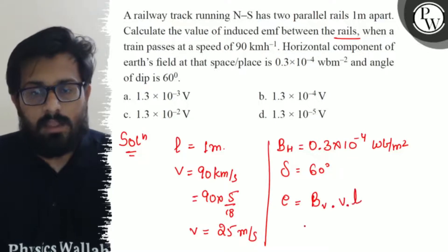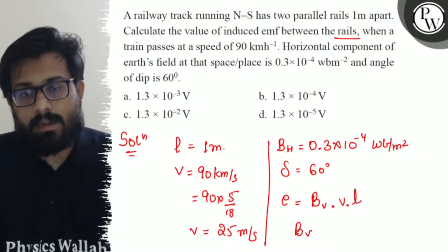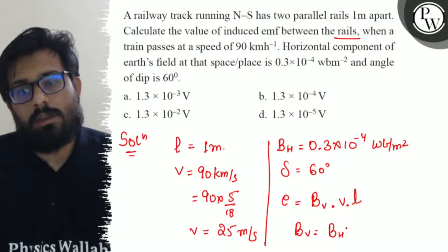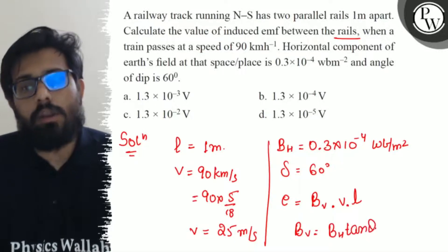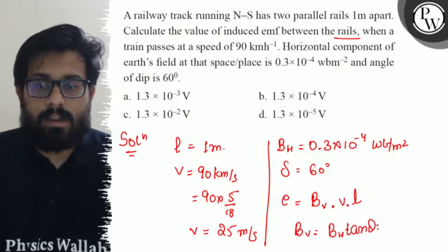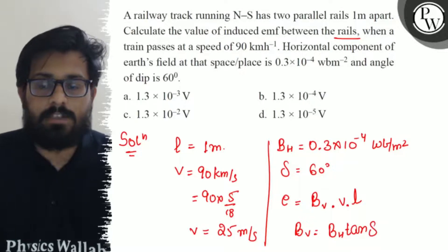And Bv can be written as Bh tan(θ), where Bh is the horizontal component of the magnetic field. So this comes out with tan of delta, which is the dip angle.